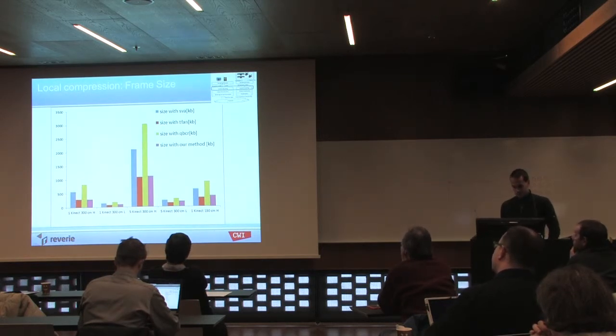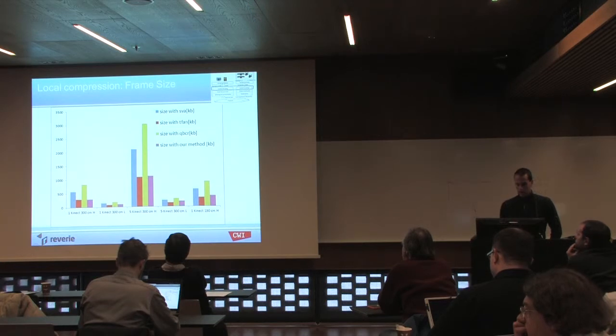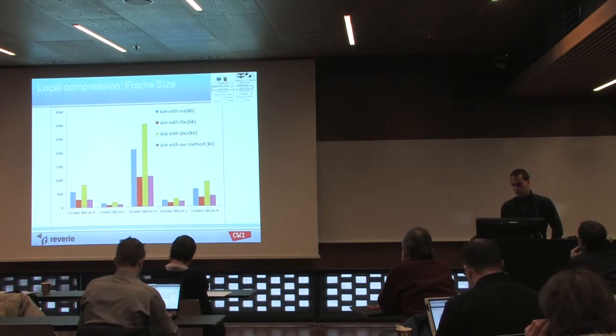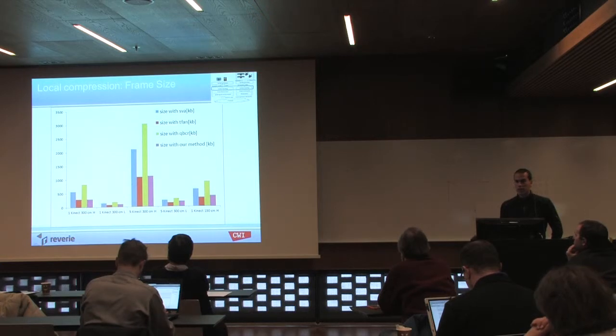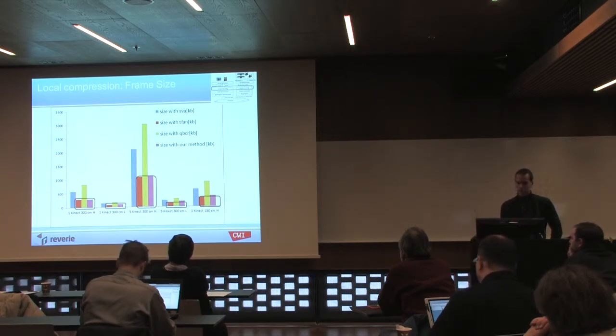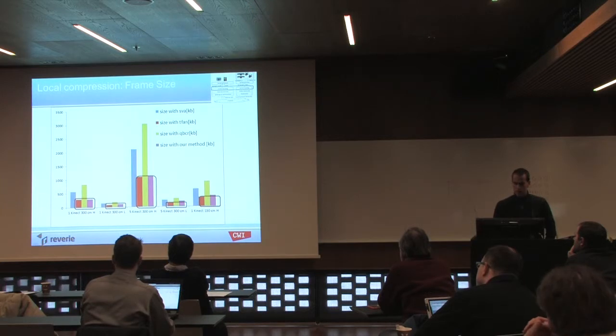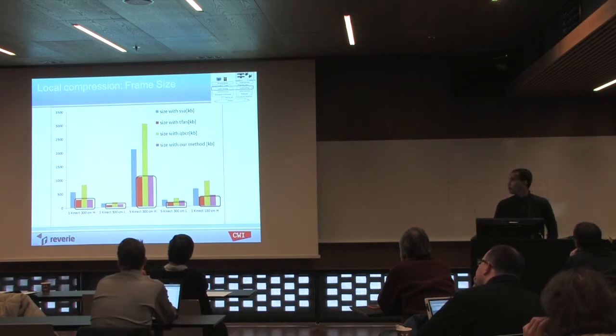I start to compare different methods. First, I have to explain the data sets. From the capturing system, we got different data sets to test. We have some data sets at 300 centimeters, which represent the living room experience, and some from closer by at 130 centimeters, which represent the user sitting in front of his PC with a Kinect reconstructing his head. From the frame size, we can see that we achieve a bit higher bitrate compared to the triangle fan coder. This is quite a surprising result, considering you can achieve this rate. But it shows that such schemes could work for live-captured meshes.